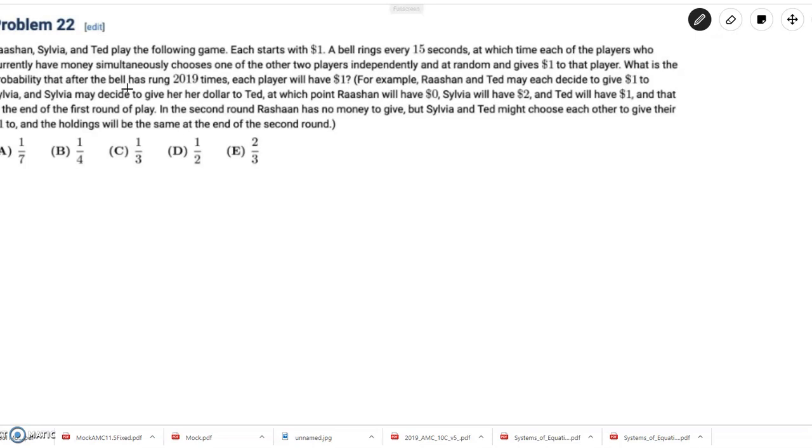For example, Rashaan and Ted may each decide to give one dollar to Sylvia, and Sylvia may decide to give her dollar to Ted. At which point Rashaan will have zero dollars, Sylvia will have two dollars, and Ted will have one dollar. And that is the end of the first round of play. In the second round, Rashaan has no money to give, but Sylvia and Ted might choose each other to give their one dollar to. And the holdings will be the same at the end of the second round.